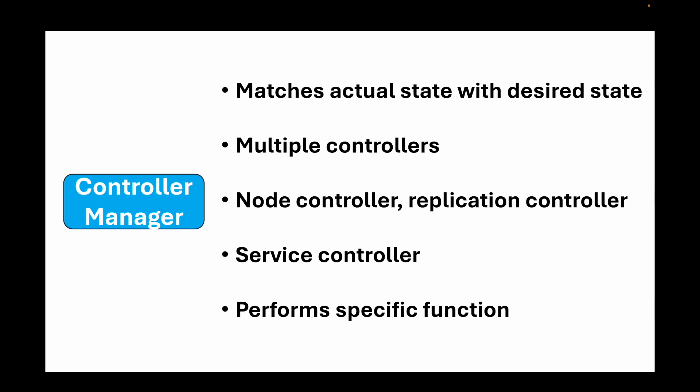To summarize the control plane components: we have the API server which acts as your front door; etcd where all cluster information is stored; the scheduler responsible for running pods on worker nodes; and the controller manager which reconciles actual state with desired state. Under the controller manager you have multiple controllers — node controller, replication controller, service controller, and many more.